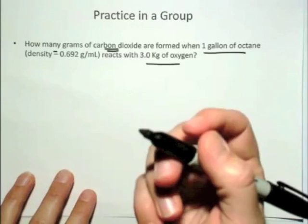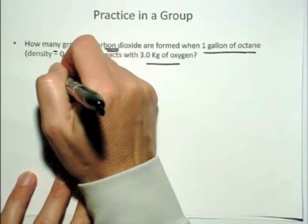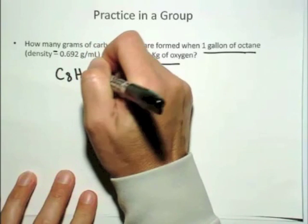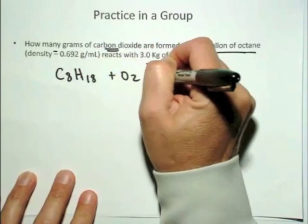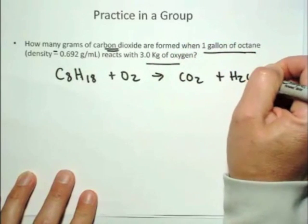Okay, I trust that you tried it in your group. The first thing you have to do is you should know what octane is, and you want to be able to write down a balanced chemical equation. So the formula for octane is C8H18, burns in oxygen to give carbon dioxide plus water, that's your combustion reaction here.